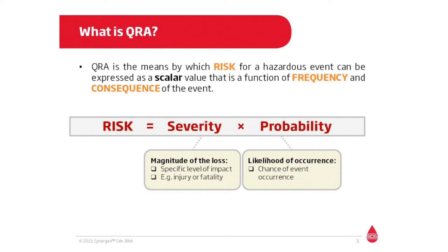So what is a QRA? It's a process which can be used to express risk of a hazardous event in the form of a scalar value. By performing it for all potential hazardous events in a facility, we will be able to obtain a picture of the overall risk of a facility. This is very important because you won't be able to manage risk if you do not know what they are. Risk is a function of severity and probability. The severity refers to the magnitude of the consequence or impact of a hazardous event, and the probability is the chance of that hazardous event happening.